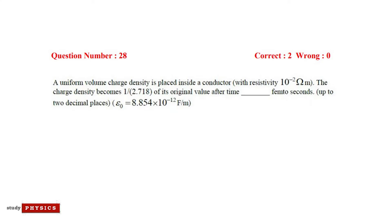Question number 28: a uniform volume charge density is placed inside a conductor with resistivity 10 to the power minus 2 ohm meter. The charge density becomes 1 divided by 2.718 of its original value after time t in femtoseconds.